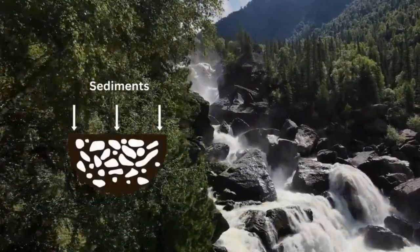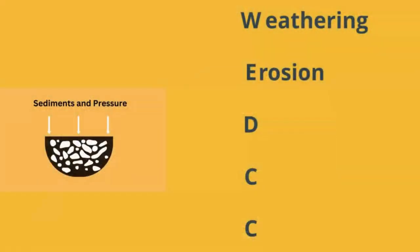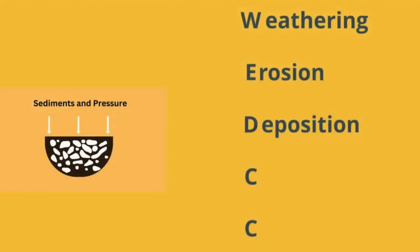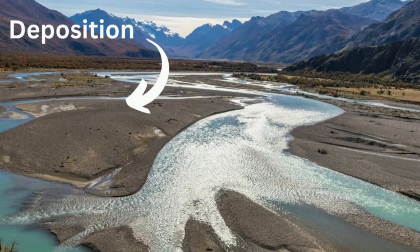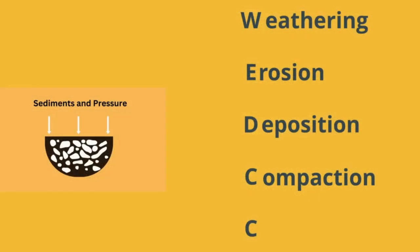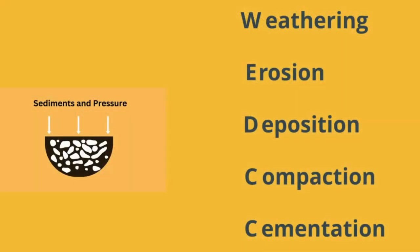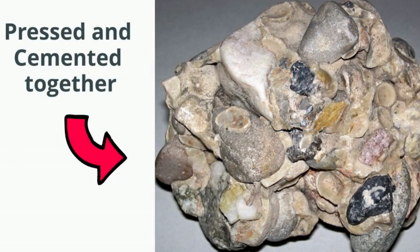E is erosion, which are forces like wind and water that carry the sediment away. D is deposition, in which these sediments are deposited. C is compaction, which is the result of pressure compacting the sediment together. And C is cementation, where the sediments are glued and pressed together into a rock.